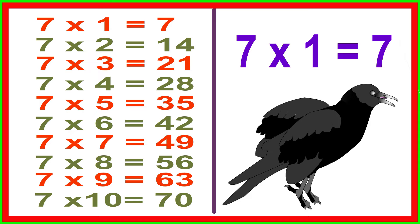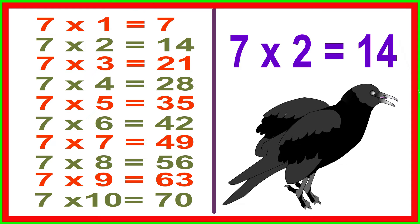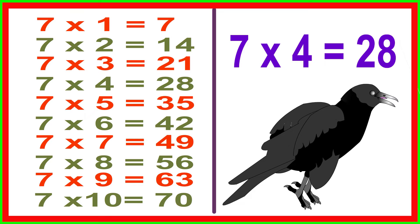7 times 1 equals 7, 7 times 2 equals 14, 7 times 3 equals 21, 7 times 4 equals 28, 7 times 5 equals 35.